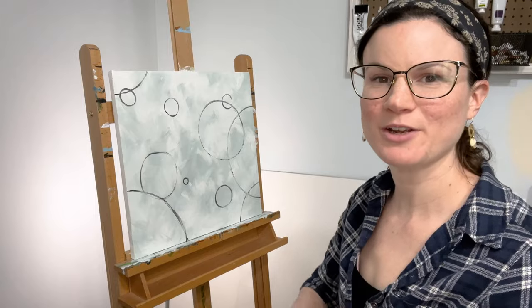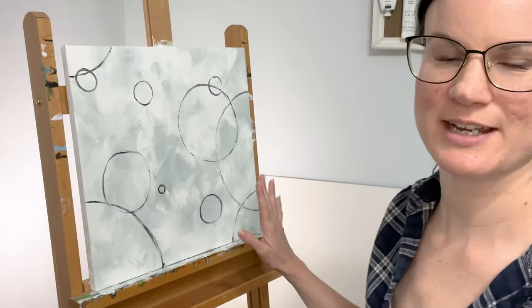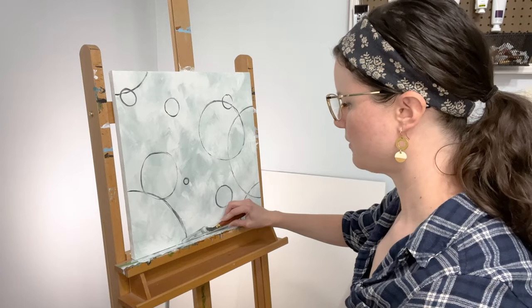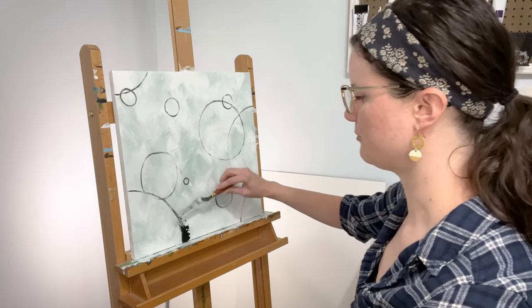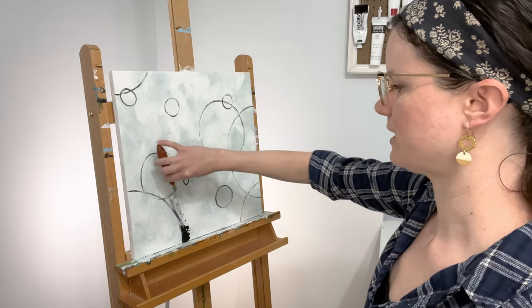Okay, so now I'm going to go back over the circles with the palette knife. Really add bold graphic textured circles. So sometimes I want a thicker line so I'll put the palette knife pretty flat against the canvas and then if I want a thinner line I'll just kind of trace it this way.